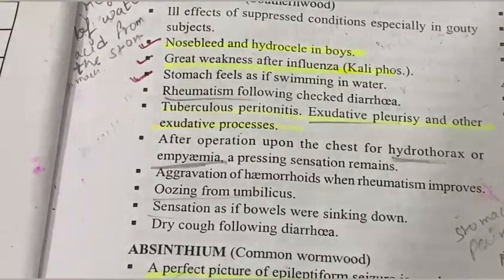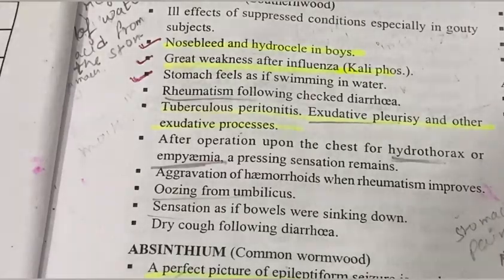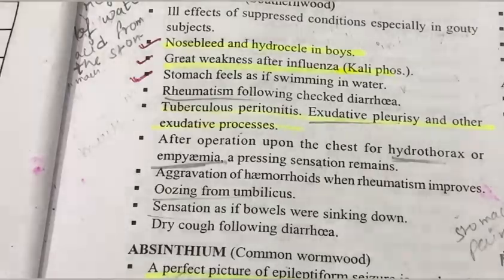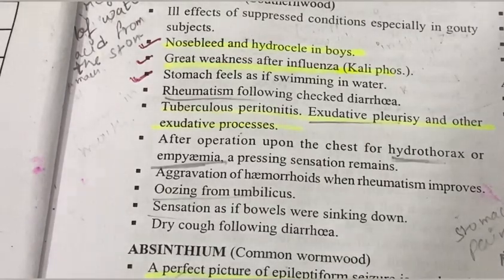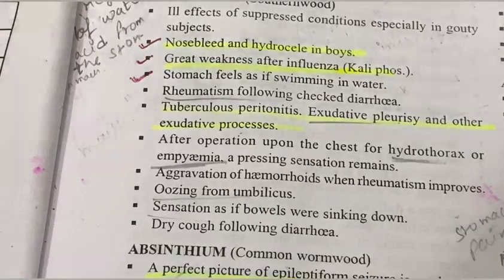The fourth symptom is that the stomach feels as if swimming in water — the patient feels as if their stomach is swimming in water. The fifth symptom is rheumatism following checked diarrhea.